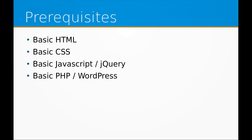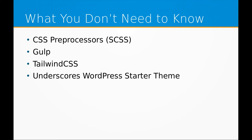Alright, first things first are the prerequisites for this tutorial. You should know basic HTML, CSS and JavaScript, maybe a little jQuery, and some basic PHP and WordPress. The Underscores theme is going to take care of a lot of the basic WordPress boilerplate for us, so we won't do a whole lot with actual WordPress — we're mostly going to be focusing on using Tailwind to style a theme.